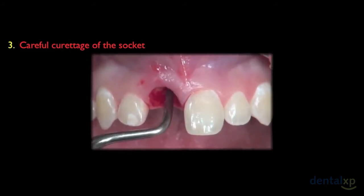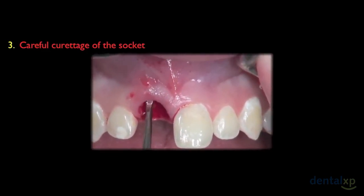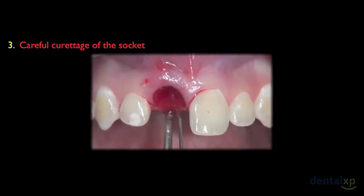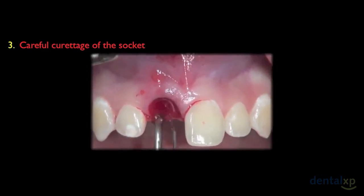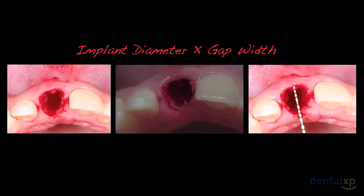The next step is careful curettage of the socket to remove granulation tissue and remains of the periodontal connective tissue. Be careful during this procedure not to traumatize the gingival tissue — neither the gingival margin nor the papilla — especially because we are working with very thin soft tissue. I suggest giving plenty of irrigation with saline solution to clean the socket as much as possible.